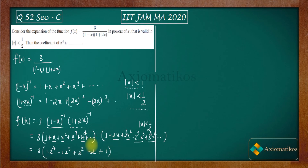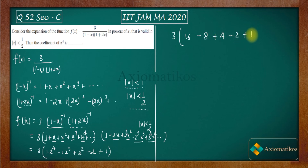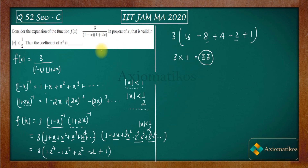Now let us calculate: 2⁴ = 16, 2³ = 8, 2² = 4, so we have 16 - 8 + 4 - 2 + 1 = 11. This is the coefficient from the product of the two series. Since f(x) = 3 / [(1-x)(1+2x)], we multiply by 3, giving 3 × 11 = 33 as the coefficient of x⁴ in the expansion.